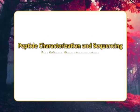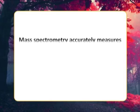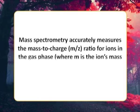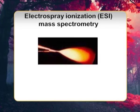Peptide characterization and sequencing by mass spectrometry. Mass spectrometry has emerged as an important technique for characterizing and sequencing polypeptides. MS accurately measures the mass to charge (m/z) ratio for ions in the gas phase, where m is the ion's mass and z is its charge. However, the development of two techniques has eliminated the other limitations: electrospray ionization and matrix-assisted laser desorption ionization.